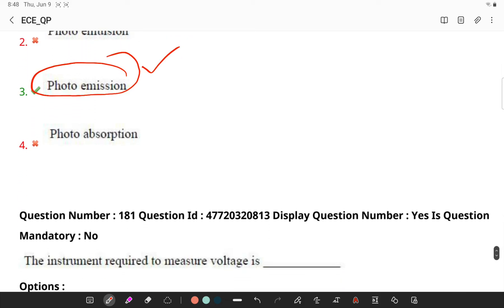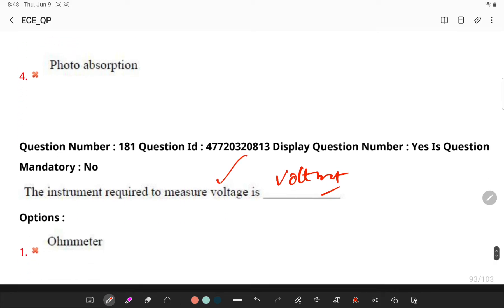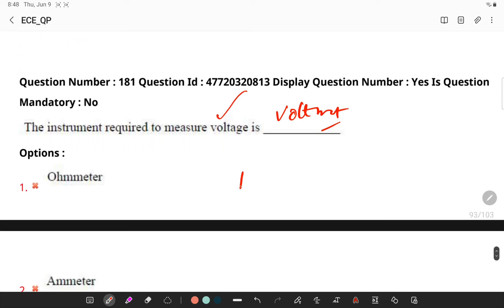What is the instrument required to measure voltage? Very simple. We know the voltmeter. This is an instrument which is used to measure the voltages of either direct or alternating currents on a scale usually graduated in volts or millivolts or kilovolts.